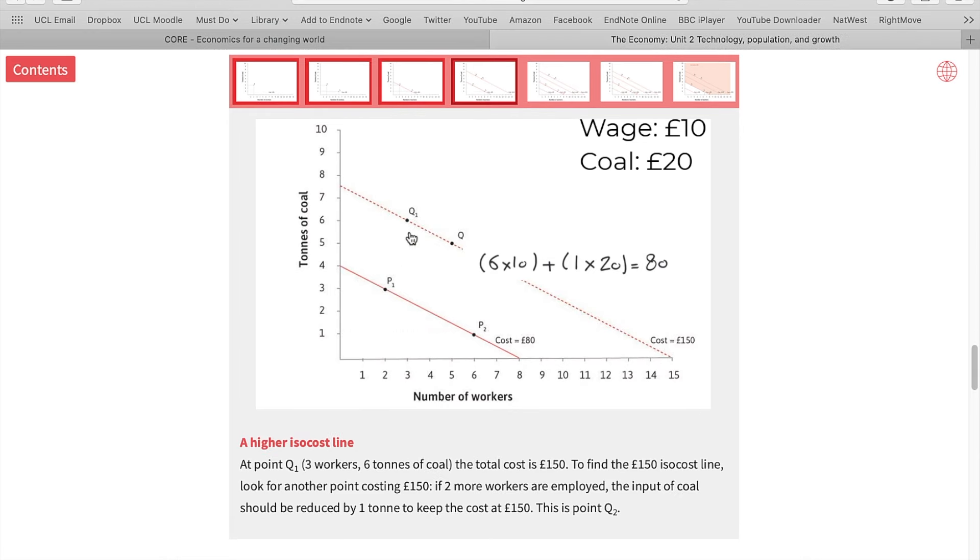Now, technology Q1 and Q2 lie at a higher isocost curve. They are more costly technologies. Obviously, why? Because, for instance, if you compare Q1 to P1, Q1 uses more of both inputs, more workers and more coal. So therefore, it's definitely more costly. Same with the Q2 if you compare Q2 with P1.